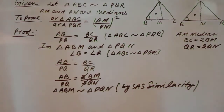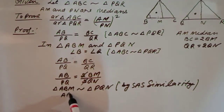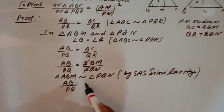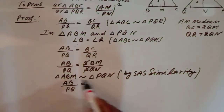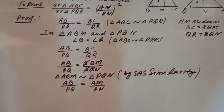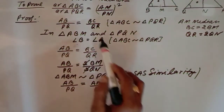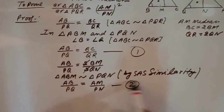By SAS similarity, these two triangles are similar. Now since they are similar, AB/PQ = AM/PN. This is our second equation. We already had AB/PQ = BC/QR as our first equation.